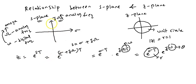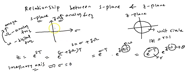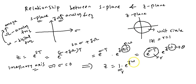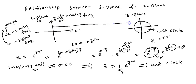Now we identify the equivalent of the imaginary axis. On the imaginary axis, σ = 0. Substituting σ = 0, we get e^0 = 1, so the radius is 1. Since ω (the phase angle) is still changing, the radius is 1 but the phase angle is changing. Therefore, the imaginary axis in the s-plane is equivalent to the unit circle in the z-plane.